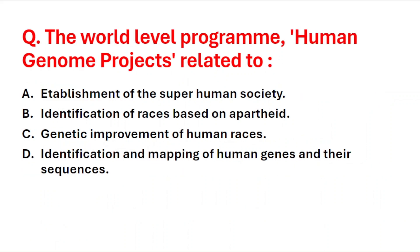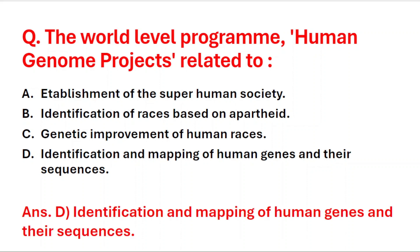Next question: the world-level program, the Human Genome Project, is related to — A: establishment of a superhuman society, B: identification of races based on apartheid, C: genetic improvement of human races, D: identification and mapping of human genes and their sequences. The right answer is option D — identification and mapping of human genes and their sequences.